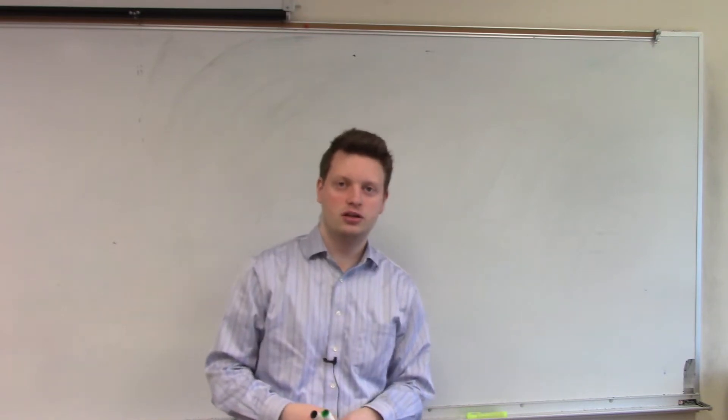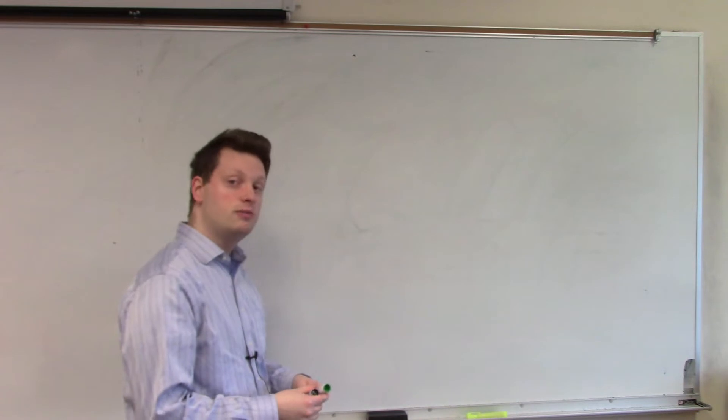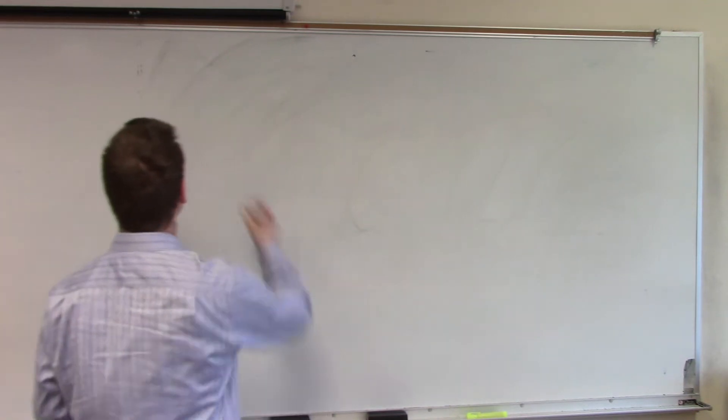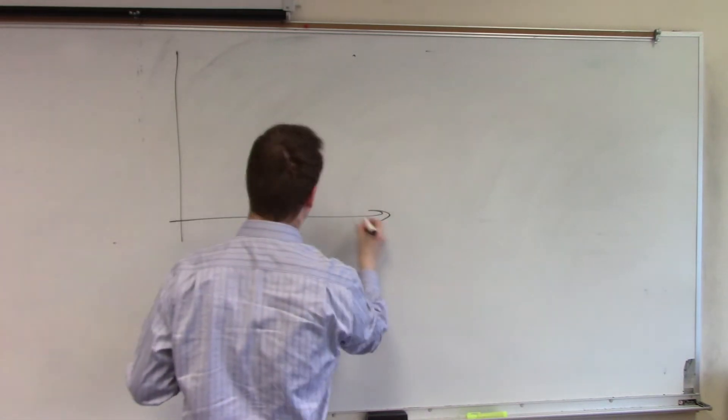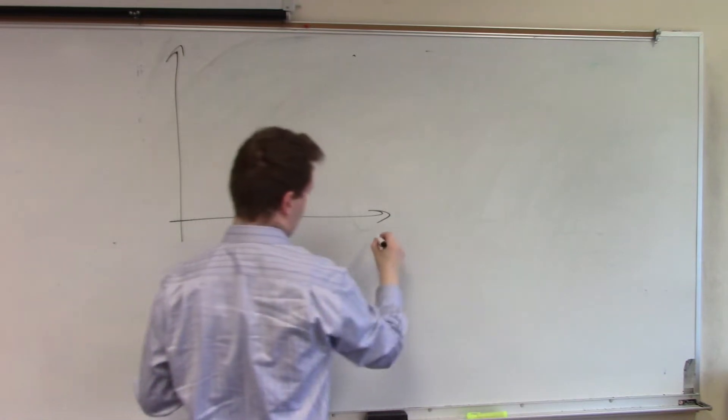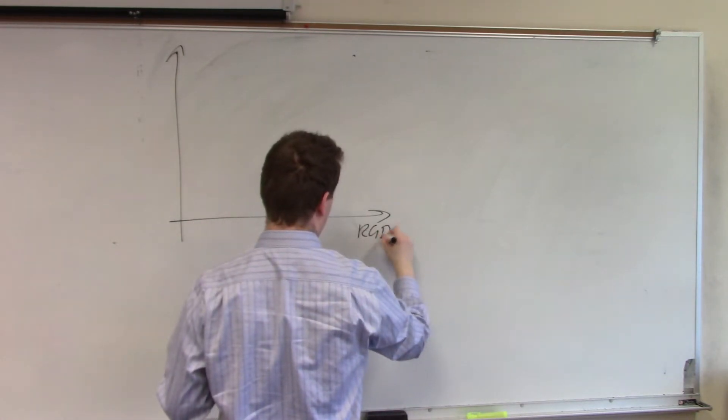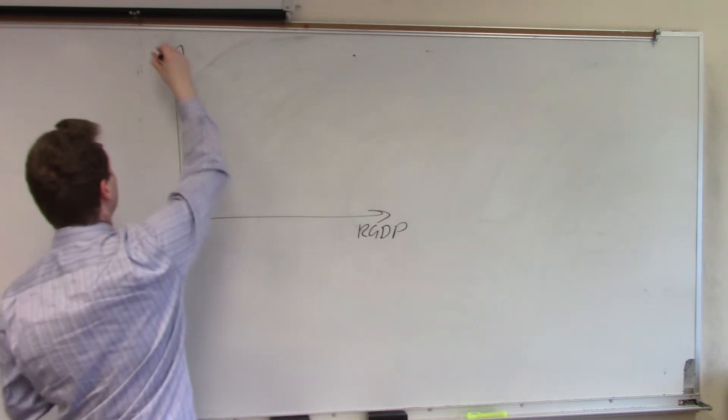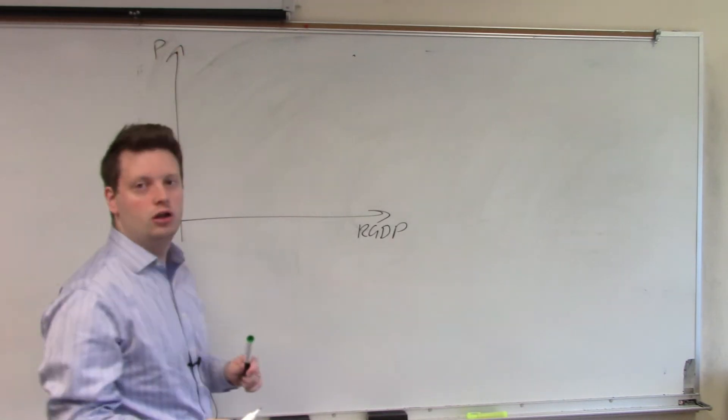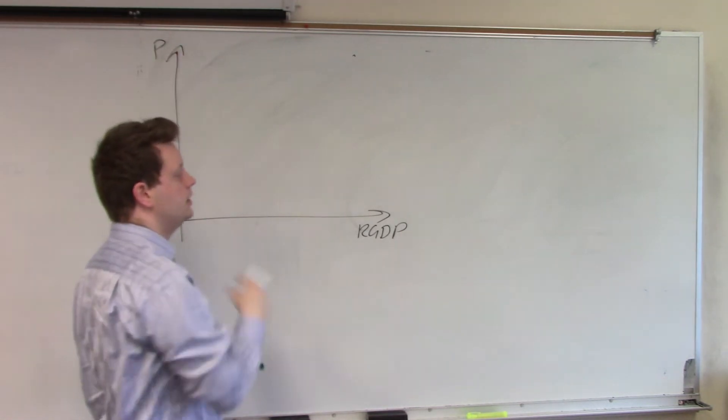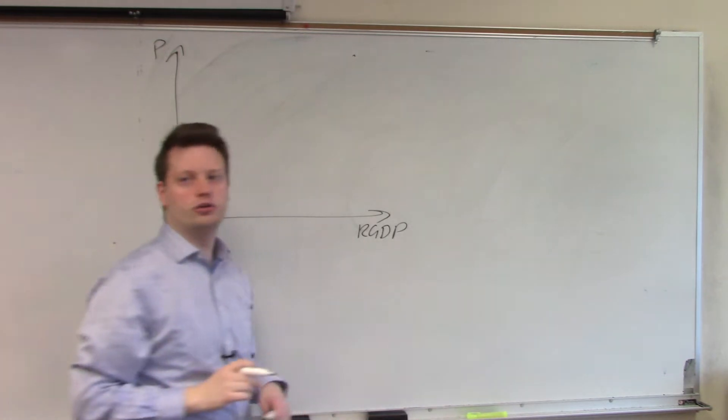Let's start with the following aggregate demand and aggregate supply model. We have a graph here and we have the price level on the vertical axis and real GDP on the horizontal axis.